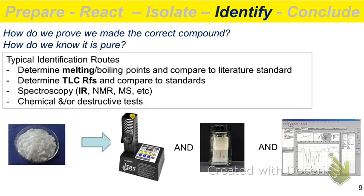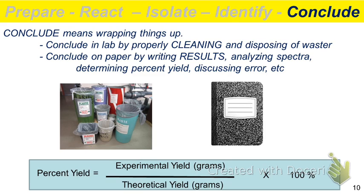What did you calculate at the beginning of the experiment? A theoretical yield. How close were you to your theoretical yield? If you did a really good job, you'd be close to it. We'd evaluate that with a percent yield. You'll finish your experiment with a percent yield. To finalize everything, clean up, dispose of waste in the appropriate containers, write a brief conclusion in your lab notebook, get it signed off, and you're done.